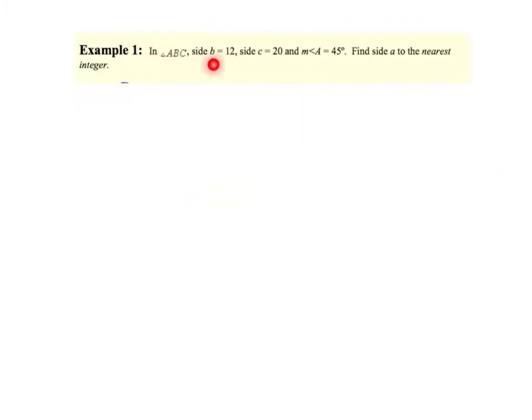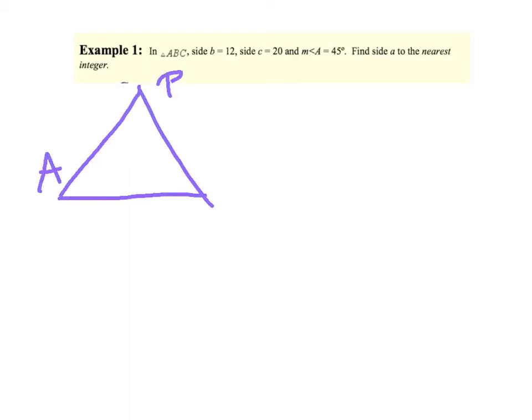Let's dive in. In triangle ABC, side b equals 12, side c equals 20, measure of angle A equals 45. Find side a to the nearest integer. We want to sketch just like we did with the law of sines. A, B, C — remember, capital letters are the angles. Side b, which is across from angle B, is 12. Side c, which is across from angle C, is 20. Measure of angle A is 45. Now always ask yourself: do I have law of sines or law of cosines?